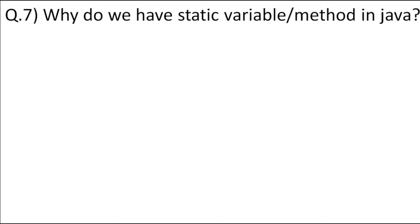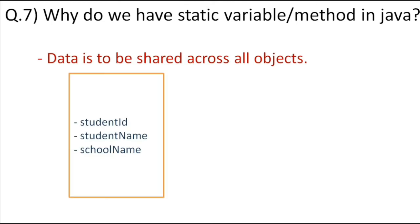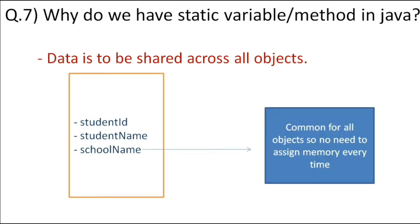Why do we have static variables or methods? Sometimes we have data that is shared across all objects. For example, if we have student objects and a school name shared across all of them, there is no point in creating memory for the school name with every object — that would be memory wastage. So we make school name a static variable, so it takes up memory in the class area. By making a variable static, we save memory. Similarly, common methods shared across all objects are made static.